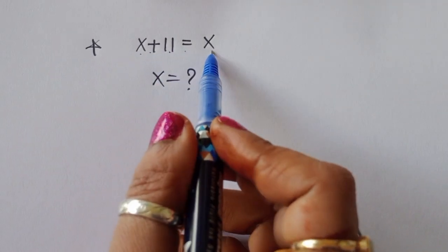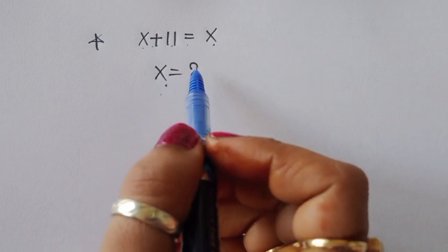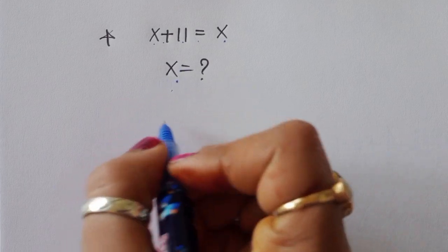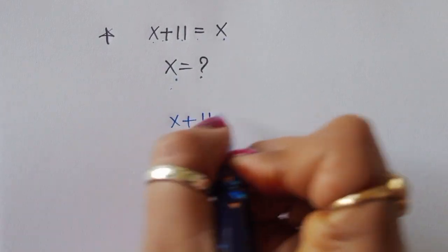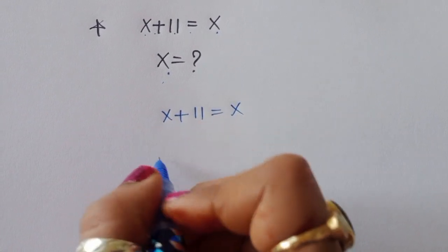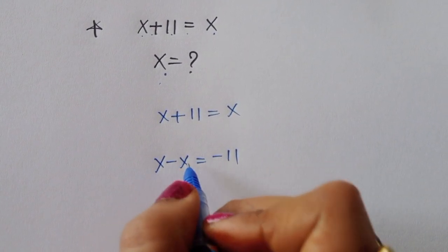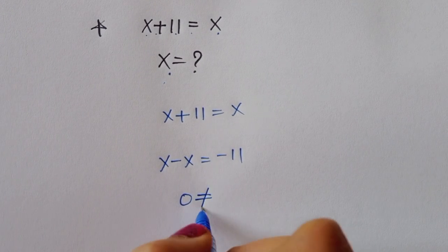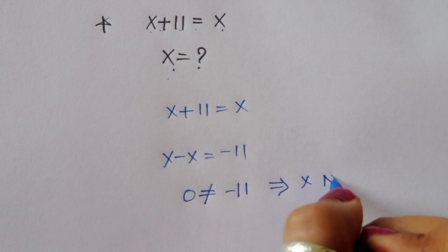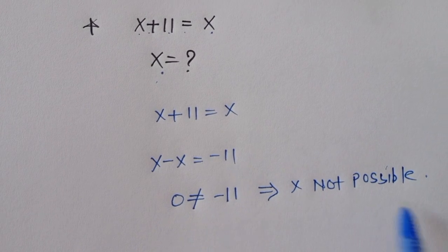The question is: given √(x + 11) = x, we have to find the value of x. Before starting the solution, if we take x to the LHS side, we get x minus x equals minus 11, which gives 0 = -11. That is not possible, so we solve this in another way.